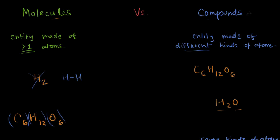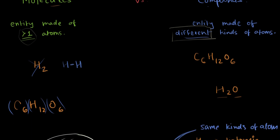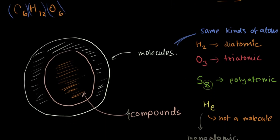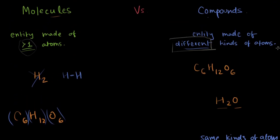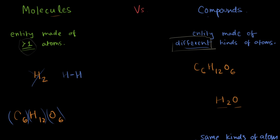To summarize: molecules are entities made of more than one atom. Compounds must have different kinds of atoms. All compounds are molecules, but not all molecules are compounds. We also covered naming conventions for same-kind-atom molecules: diatomic, triatomic, and polyatomic. I hope the confusion is cleared — let me know if you have questions, and stay frosty!